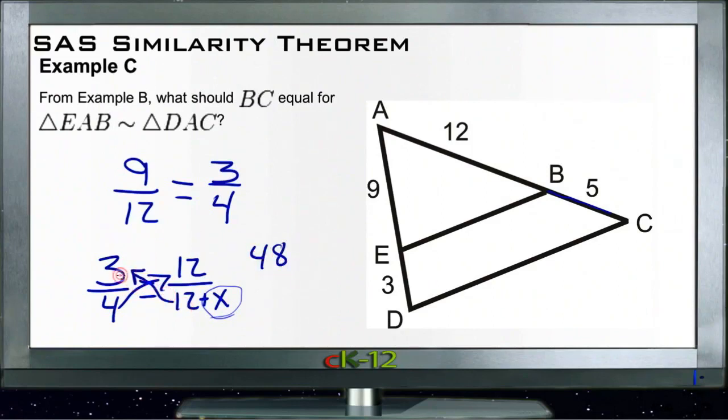And if we do 12 plus x times 3, we get 36, and we get 3x. So it goes 36 plus 3x. Subtract 36 from both sides and we get 12 equals 3x. Divide both sides by 3 and we get 4 equals x.